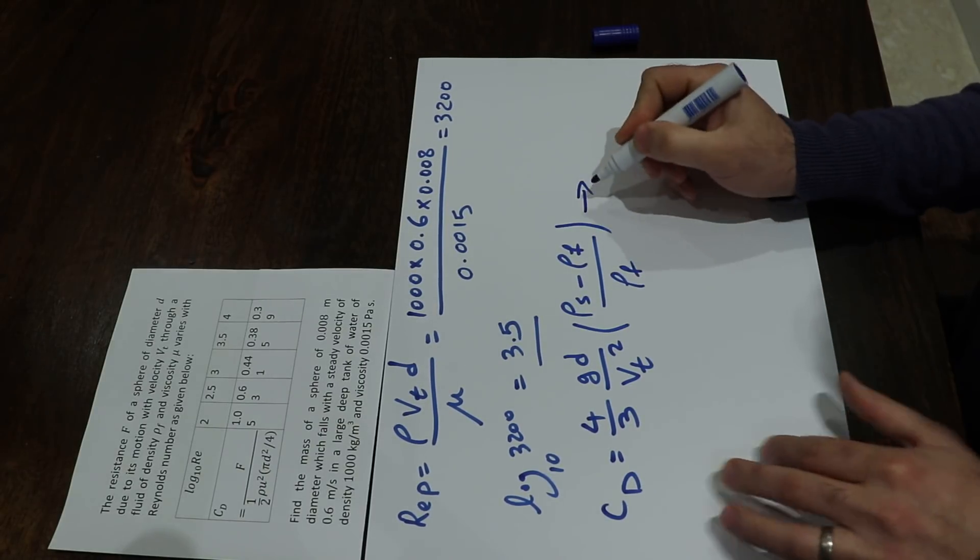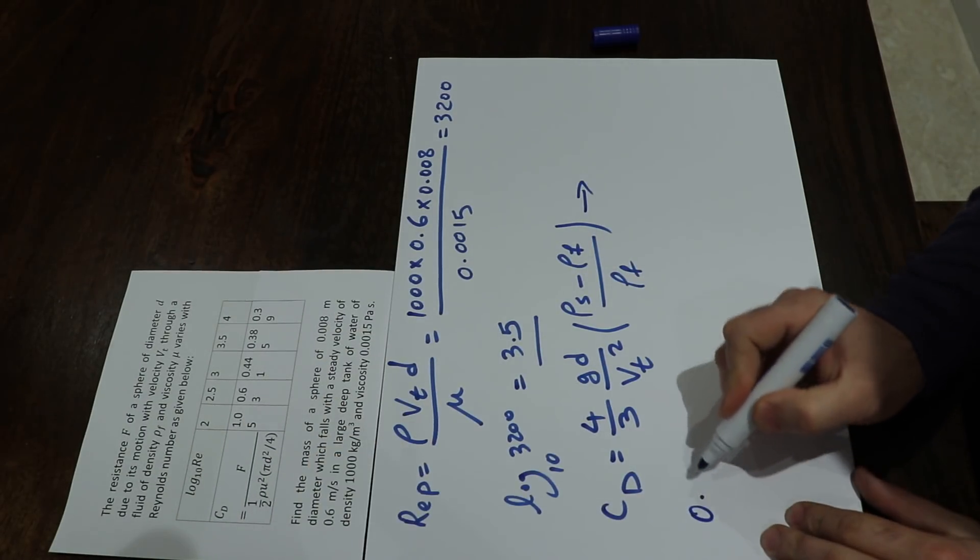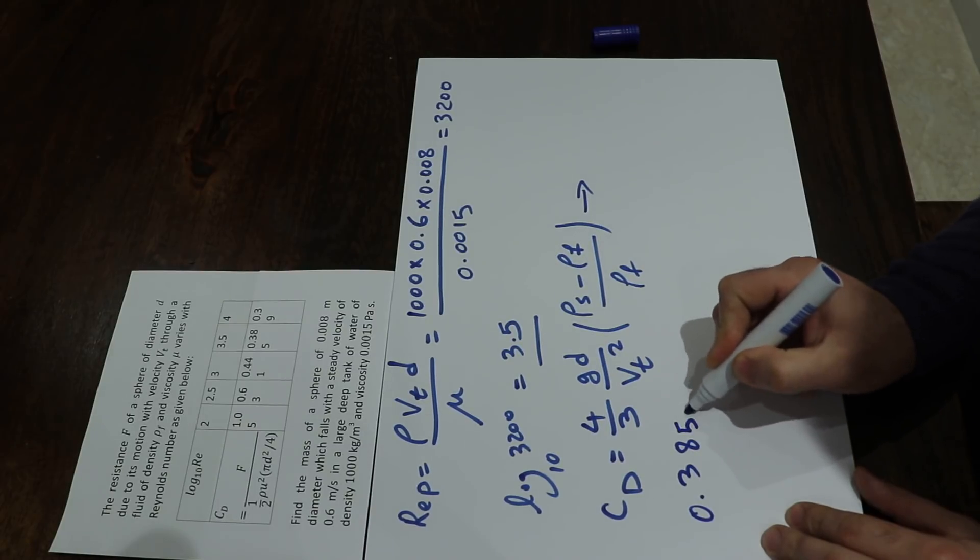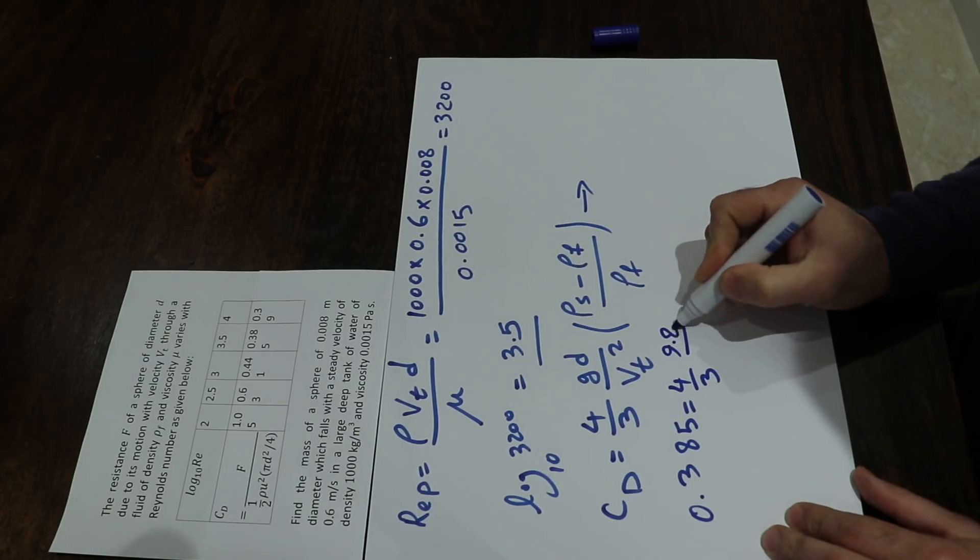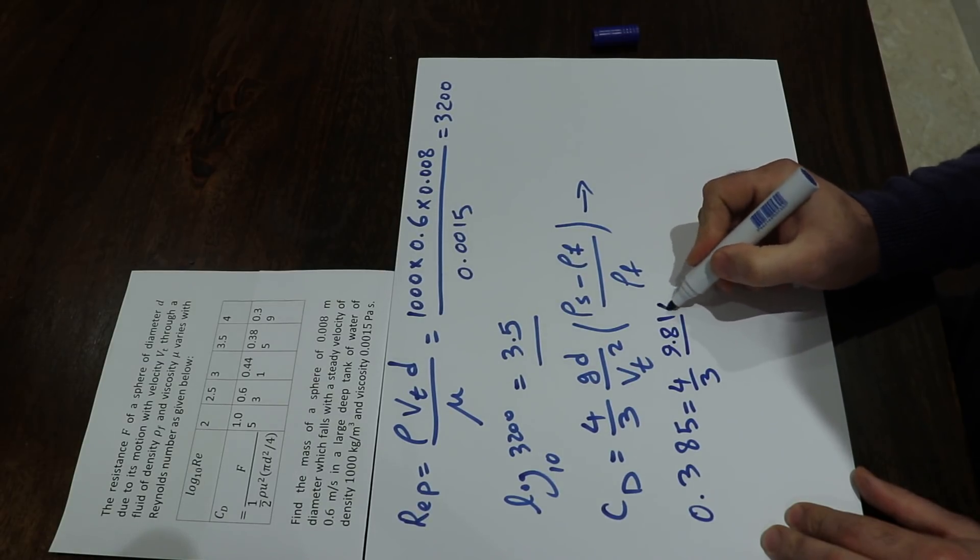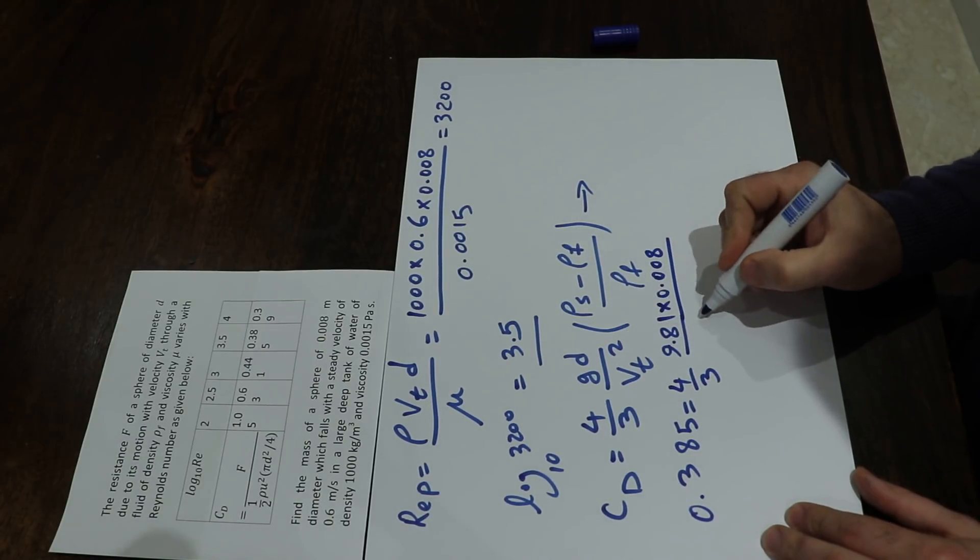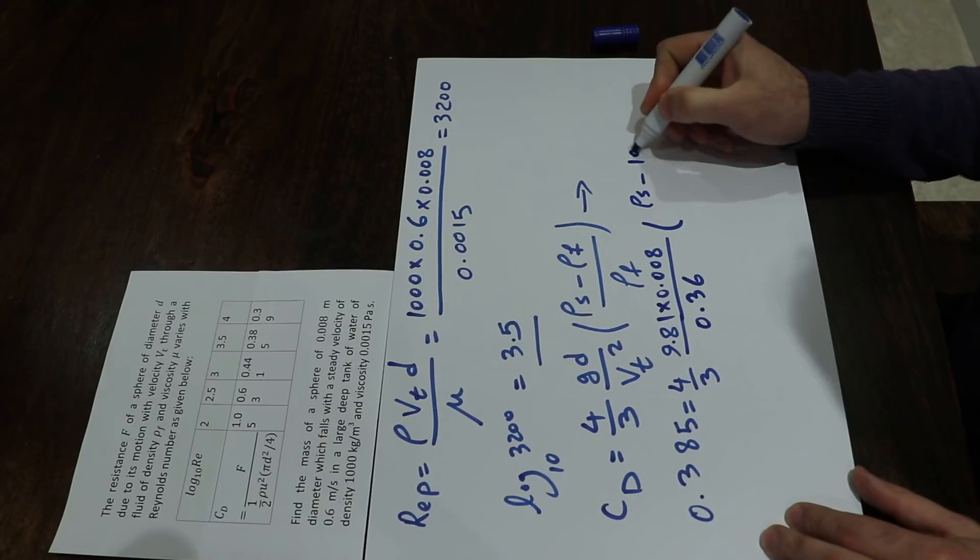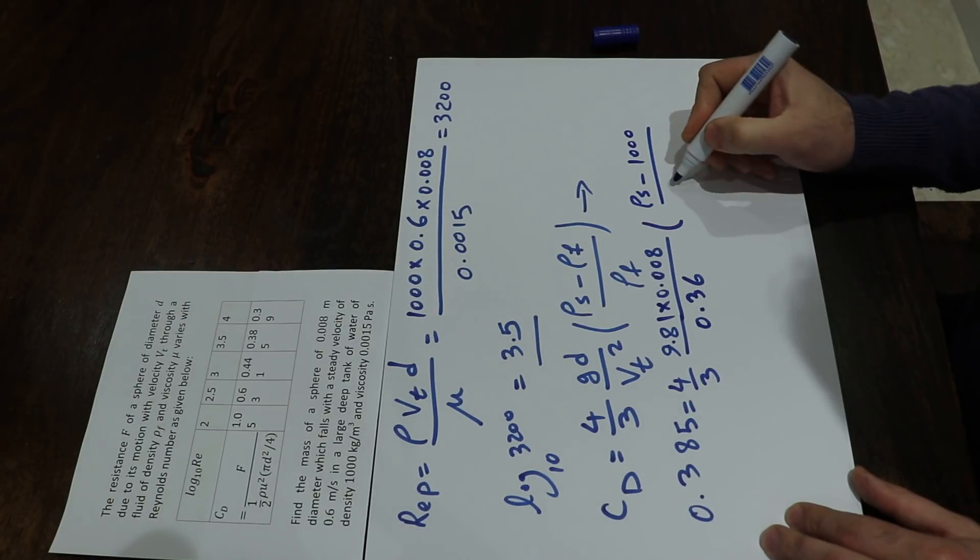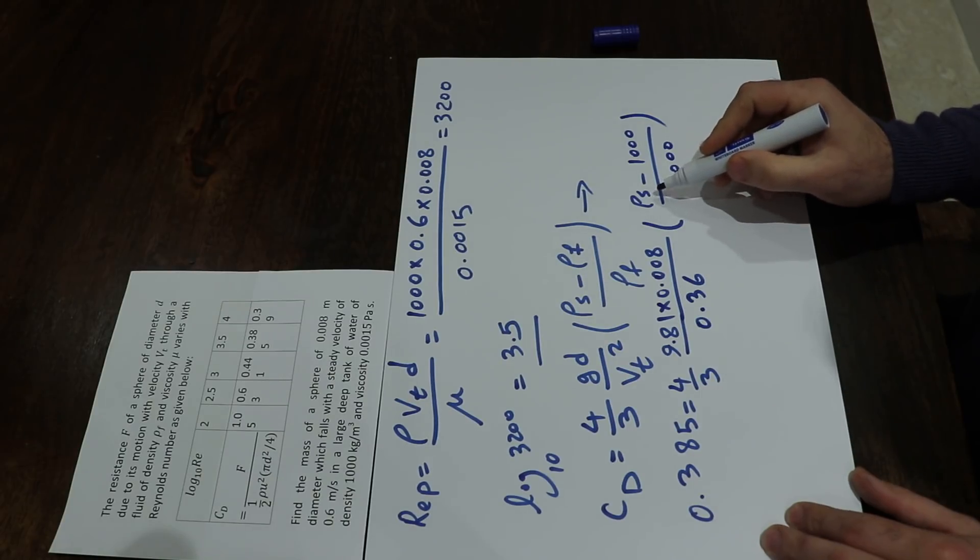Therefore, the value of cd based on this table equals 0.385, which equals 4 divided by 3 times g (9.81) times d (0.008) divided by vt² (0.6² = 0.36) times (ρs - ρf) (1,000) divided by ρf (1,000). From this equation you can calculate the density.